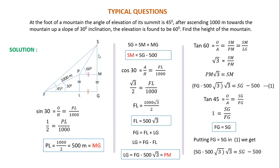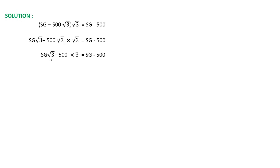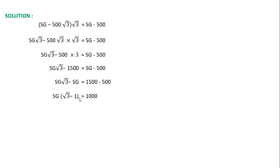Our concern is finding the height of the mountain. Opening the bracket: SG√3 minus 500√3 × √3 = SG minus 500. Root 3 times root 3 is 3, so it becomes SG√3 minus 1500 = SG minus 500. Rearranging: SG√3 minus SG = 1500 minus 500, so SG(√3 minus 1) = 1000.